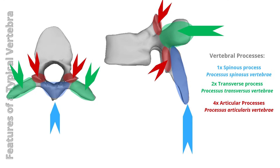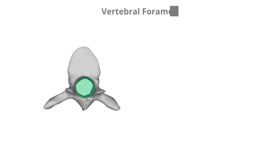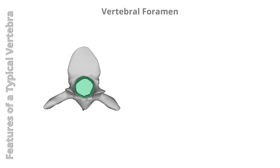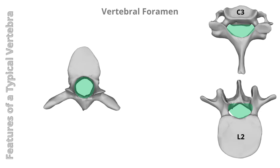Articular processes: two superior and two inferior processes facilitating articulation with adjacent vertebrae at the zygapophyseal joints. The vertebral foramen is a central opening formed by the vertebral body and vertebral arch. The vertebral foramina form the vertebral canal, which houses the spinal cord. The size of the foramen decreases as the column descends, and the shape also varies — triangular in cervical and lumbar regions, and round or oval in the thoracic region.